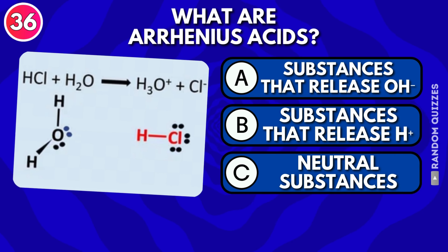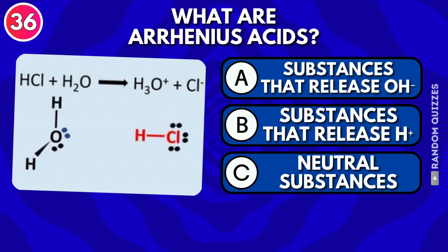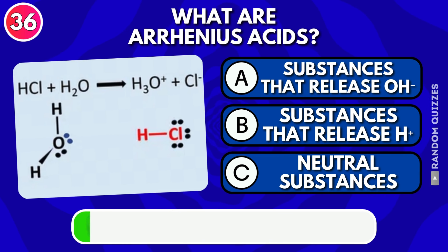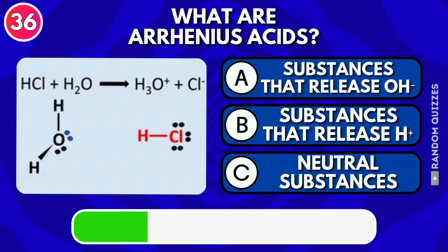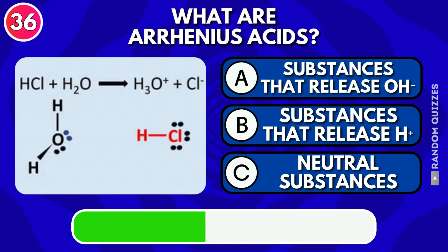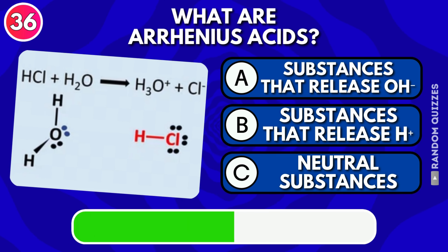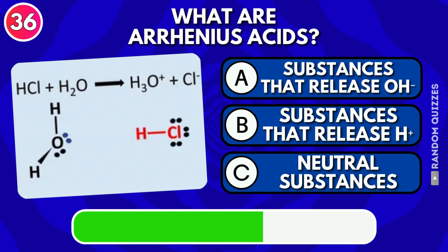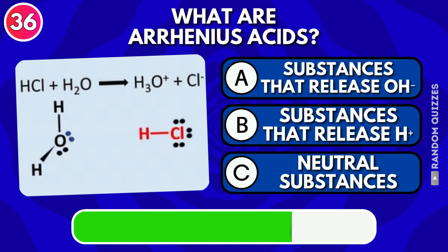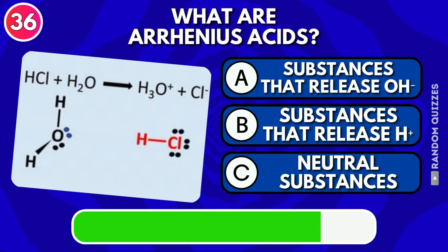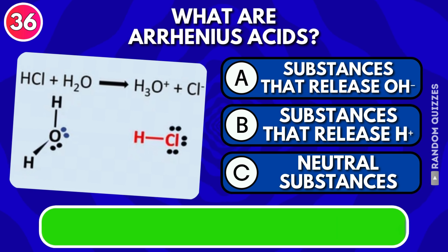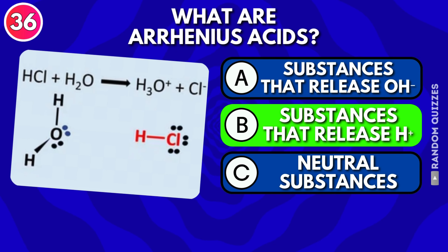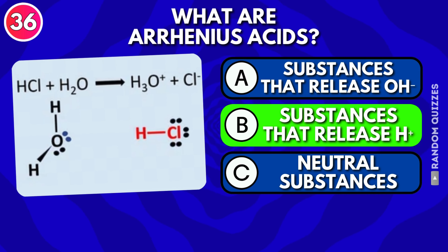What are Arrhenius acids: substances that release O, substances that release H, or neutral substances? Answer: Substances that release H.